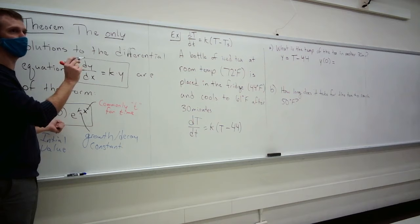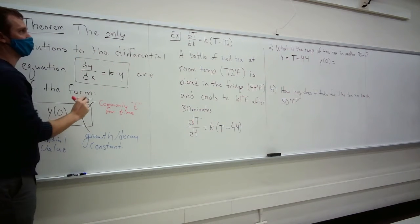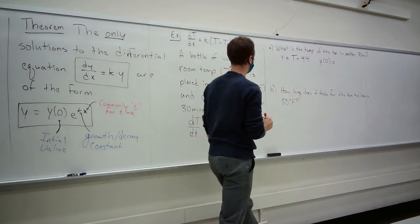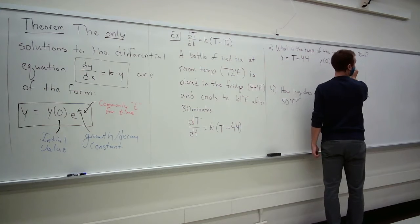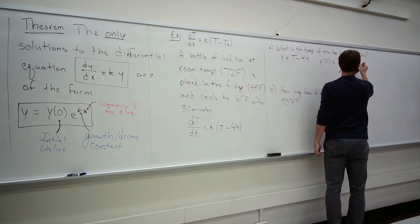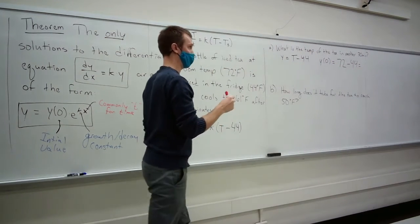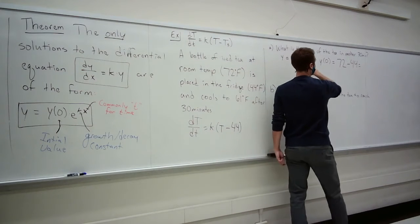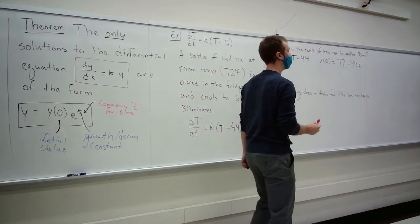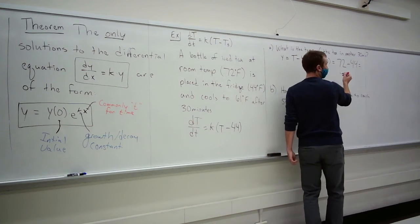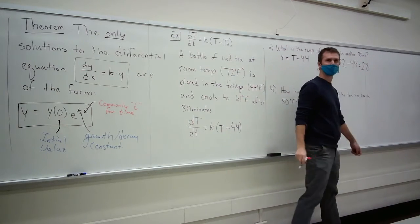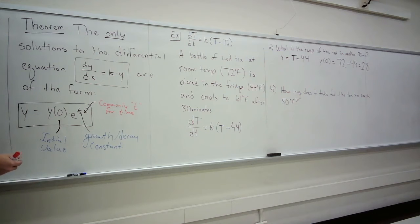The question becomes: what is the function y, and what is y at time zero? Comparing our equation to the standard form, our function y is T minus 44. The temperature at time zero is 72, so y at time zero is 72 minus 44, which is 28. That is our initial value y₀.